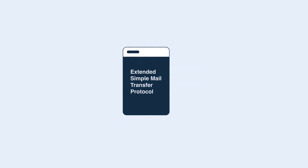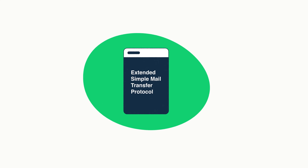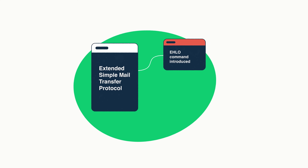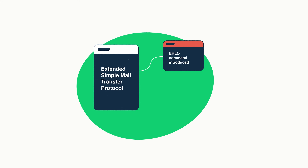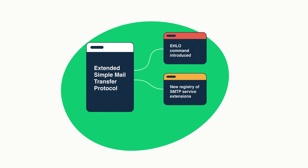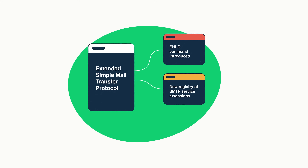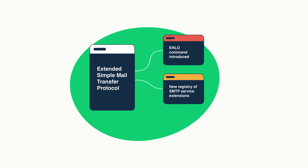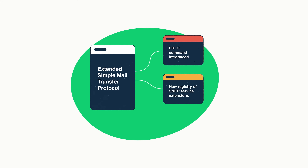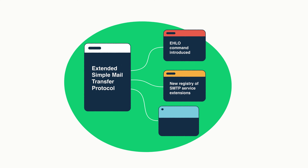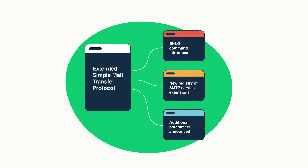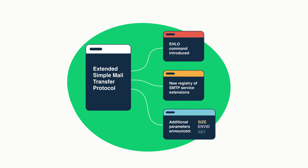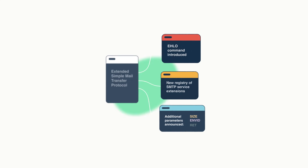ESMTP had three main changes. The EHLO command was introduced to signal that ESMTP is supported. A Service Extensions Registry was created to inform on additional SMTP capabilities. And lastly, new command options were added, such as size, envid, and ret.